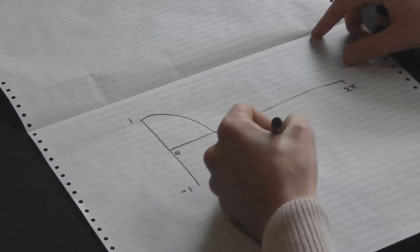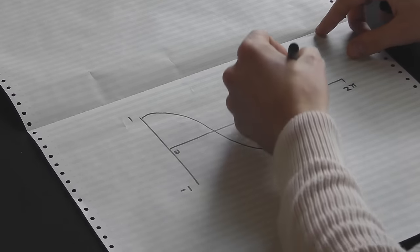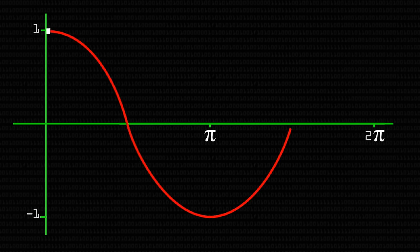And the cosine wave looks like this. So it's 1 at 0, and then at pi it goes down to minus 1, and then it goes back up to 1 at 2 pi. And it just goes on and on like this, up and down, as you increase.